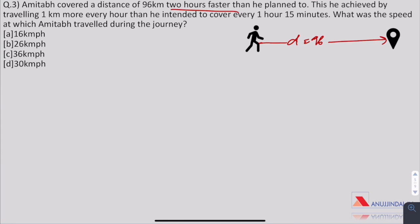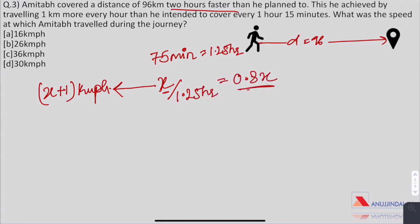Let us simplify the question. According to the question in normal circumstances he would have traveled x kilometers in 75 minutes that is 1.25 hour. But now as he has increased his speed, he travels at x plus 1 kilometer per hour. So if we have to find the original speed, we have to find x by 1.25 hour which is 0.8x.